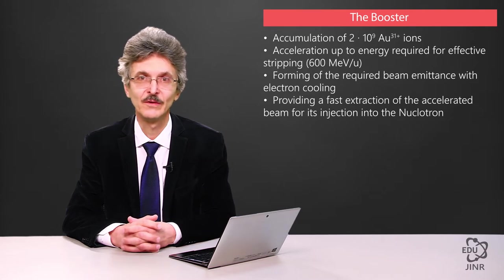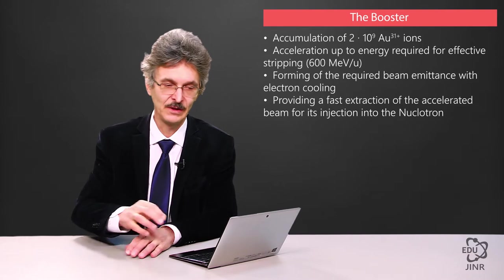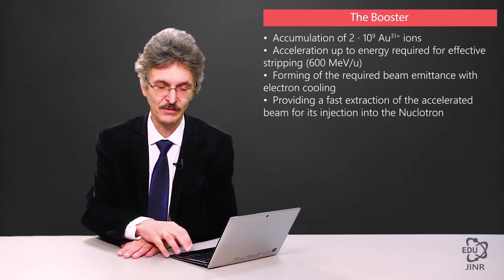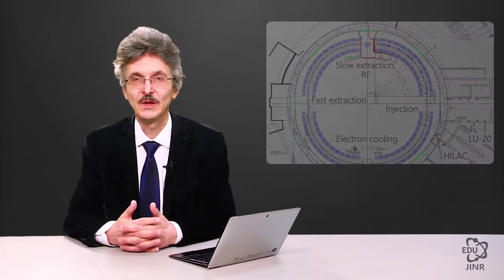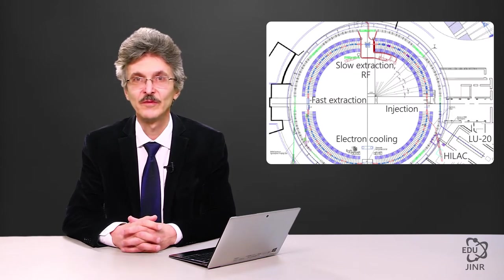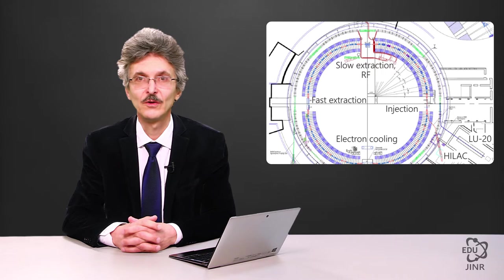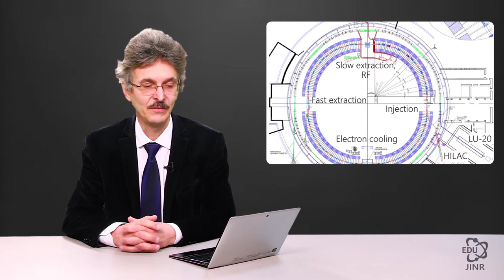The booster is used for single turn beam extraction and injection thereof into the nucleotron. It is in the transport line where stripping takes place. The geometry of the booster replicates the geometry of the synchrophasotron magnet. In fact, the booster consists of four bending sections and four straight ones, each 9 meters in length.